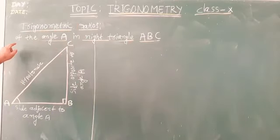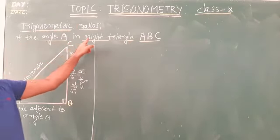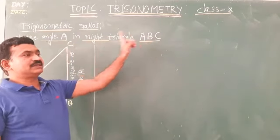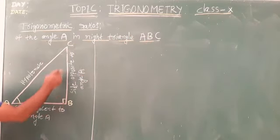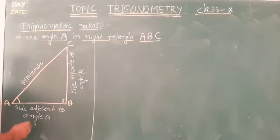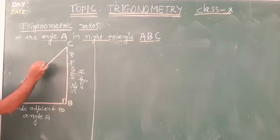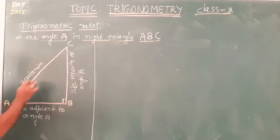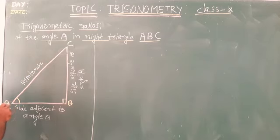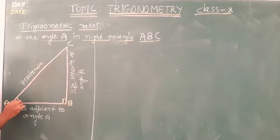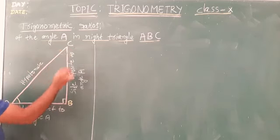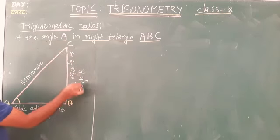We will study trigonometry ratios of angle A in the right triangle ABC. ABC is a right angle triangle where angle B is the right angle. The side opposite to angle B is the hypotenuse. Angles A and C are the active angles. For the active angle A, BC is the side opposite to angle A.